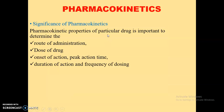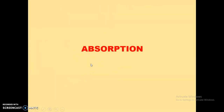Why are the pharmacokinetic properties of a particular drug important? They are important to determine the route of administration, dose of drug, onset of action, peak action time, and duration of action. According to the duration of action, we can decide the frequency of drug administration. This is only possible if we know the pharmacokinetic properties of the drug — that is, how it is absorbed, at what time it enters the blood, how it is distributed, how it is metabolized, and by which route it is excreted. So, let us discuss each one by one.